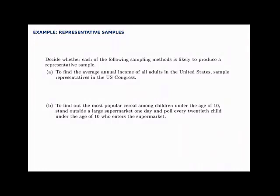We'll look at a couple of examples. First, to find the average annual income of all the adults in the United States, suppose we sampled representatives in the Congress of the United States. It turns out this is not a very representative sample. The salary for representatives in Congress is set at a fixed number, and that number is relatively high compared to the average income for all adults in the United States. So it's not representative — there are some people who make very little and some who make a lot, and Congress has a fixed value unlikely to be similar to the average. This is not representative.